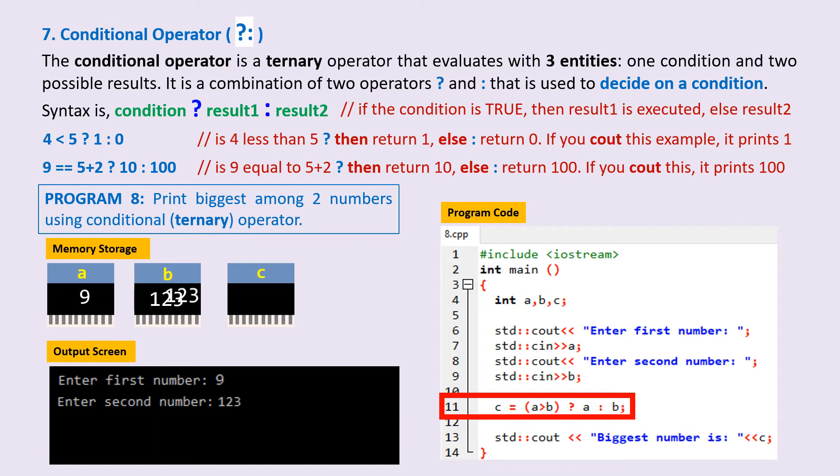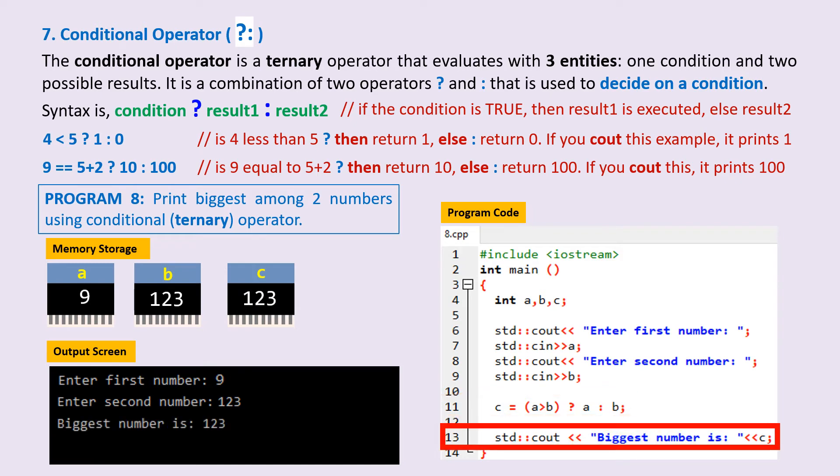On line 13 is the statement to print the biggest number onto the screen. We have it on the output screen.